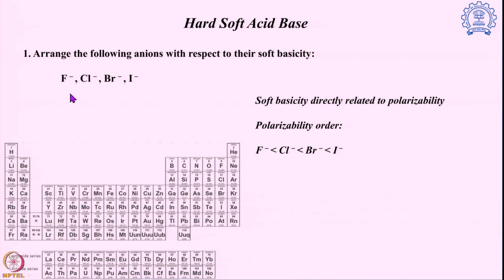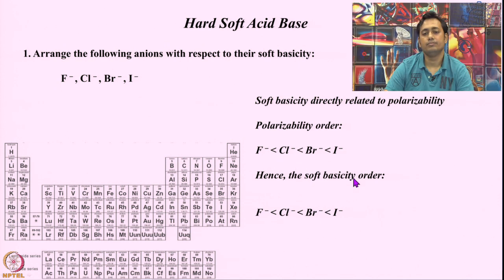We take the example of four anions — fluoride, chloride, bromide, and iodide — and try to find out which is the strongest soft base and which is the hardest base. Soft basicity is directly connected to polarizability: the more polarizable the system, the softer it is. As we go down this group, fluoride, chloride, bromide, and iodide have the same charge but the volume increases, and with that the polarizability also increases. So iodide is the most polarizable, then bromide, then chloride, then fluoride. Similarly, the soft basicity follows the same trend: iodide is the softest base, then bromide, then chloride, then fluoride.